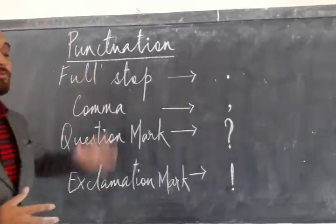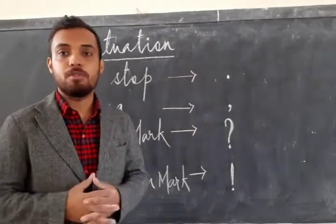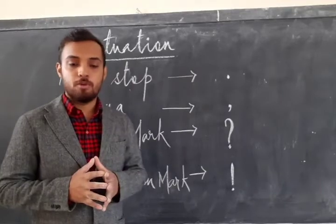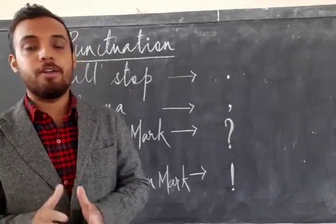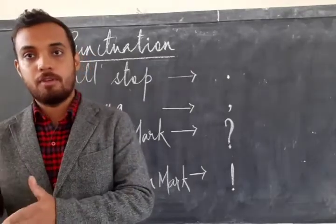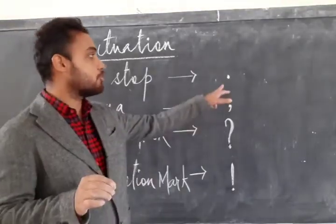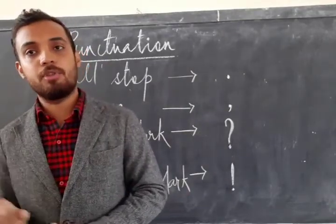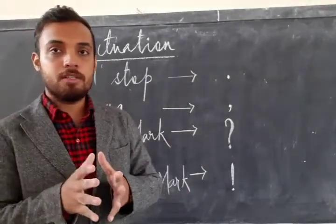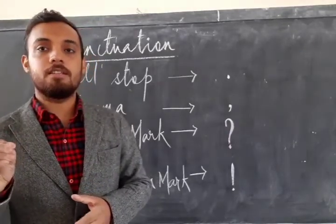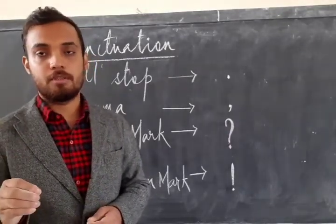The first one is full stop. Why do we use a full stop? We use full stop to mark the end of a sentence. Example: my name is Elvis. We put a full stop and a full stop looks like a dot. So what is the punctuation mark indicating? It is indicating that it is the end of a sentence.